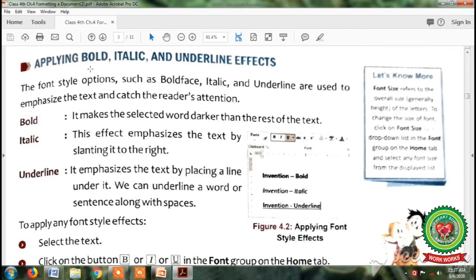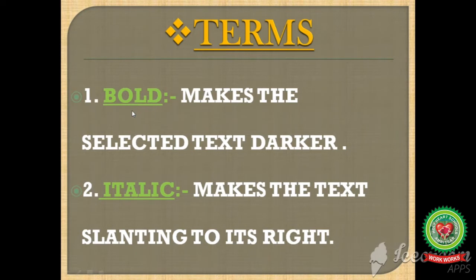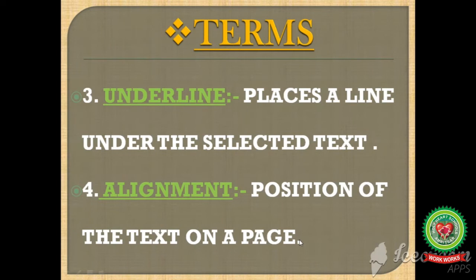Before starting our first topic we will discuss the terms. Our first term is bold — makes the selected text darker. Second is italic — makes the text slanting to its right. Third is underline — places a line under the selected text. Fourth is alignment — position of the text on a page.